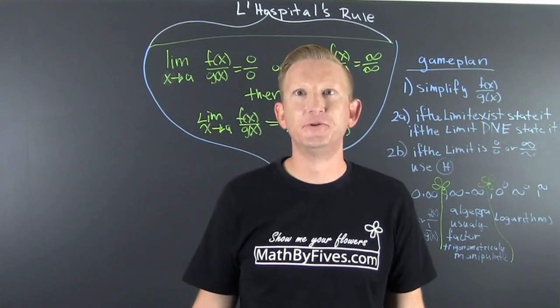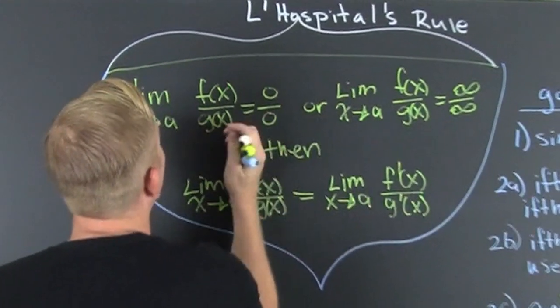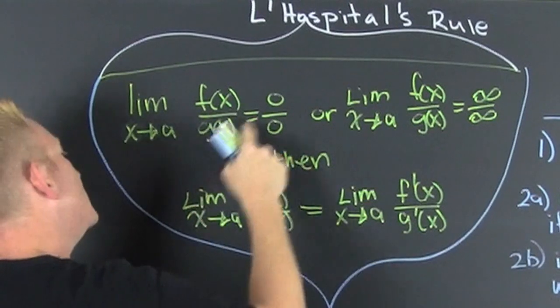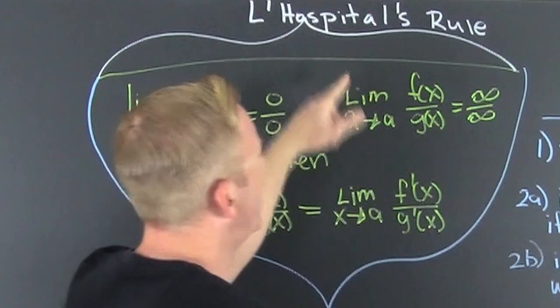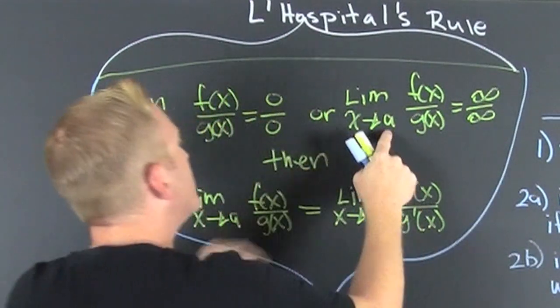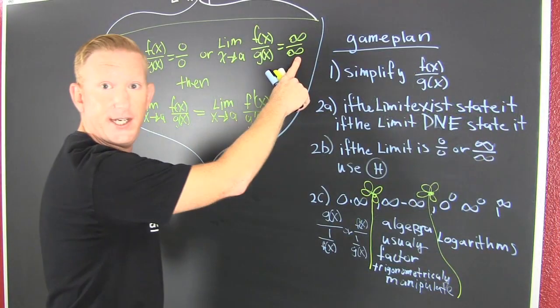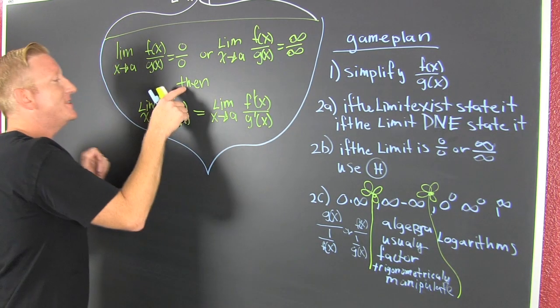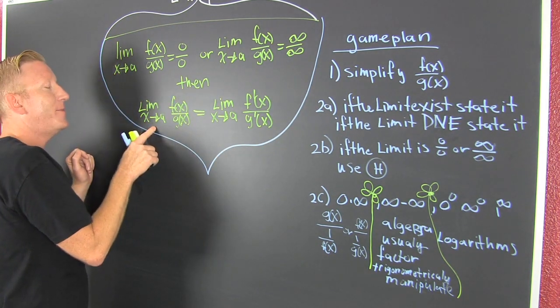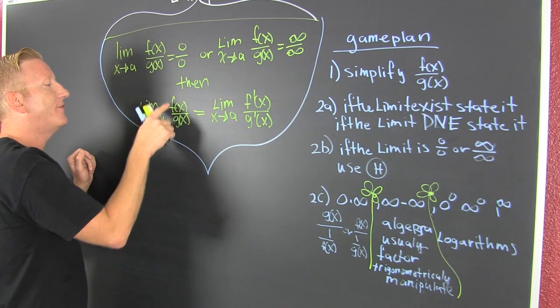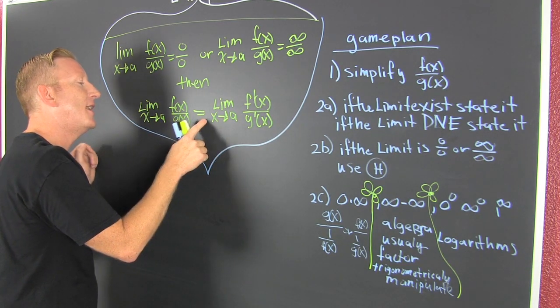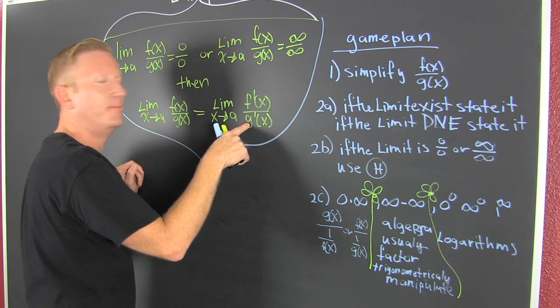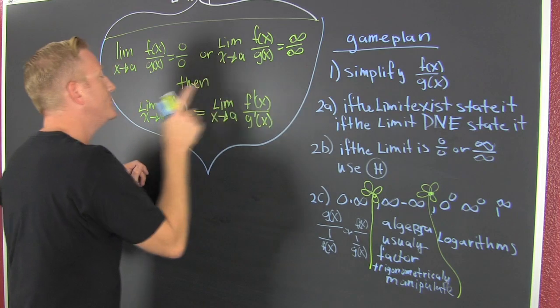When can you use that? If the limit as x goes to a of f(x) divided by g(x) is zero over zero, or if the limit as x goes to a of f(x) over g(x) is infinity over infinity, then you can use L'Hôpital's Rule. L'Hôpital's Rule says that the limit as x goes to a of f(x) over g(x) is the same as f prime, the derivative, divided by g prime, the derivative, and those two are going to be equal. And that's only if we have this case.